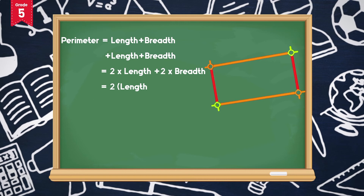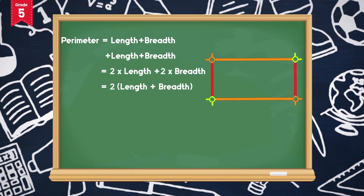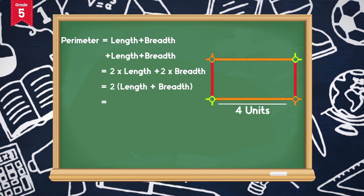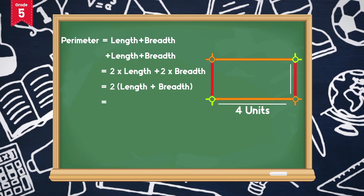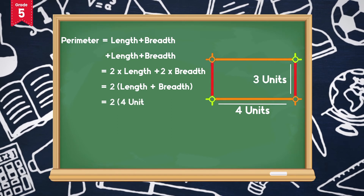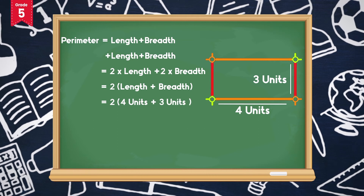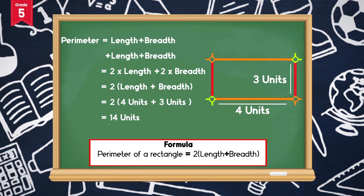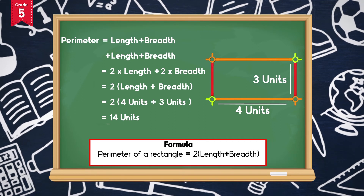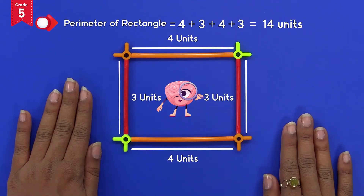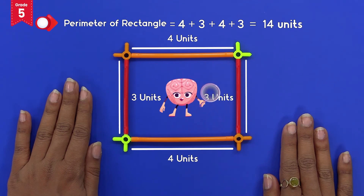This gives us 2 × (length + breadth). Here the length is 4 units and the breadth is 3 units, so 2 × (4 + 3) = 14 units. So the formula for calculating the perimeter of a rectangle is 2 × (length + breadth). We have obtained the same perimeter using the formula as we obtained through our Intelli activity.